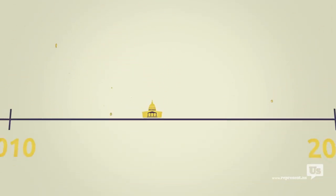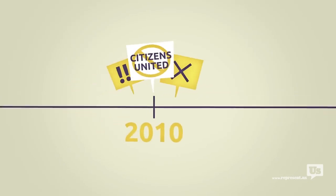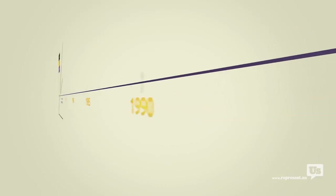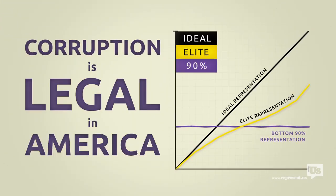There's this idea out there that this only became a problem after the Supreme Court's Citizens United decision in 2010. But the data goes back almost 40 years, and the results are clear. Corruption is legal in America.